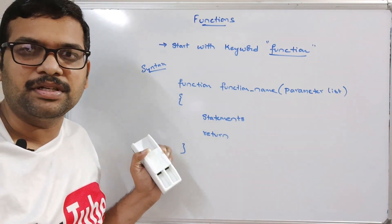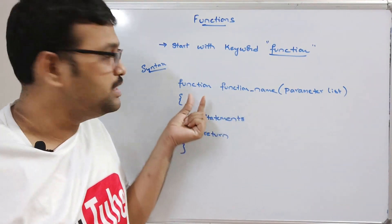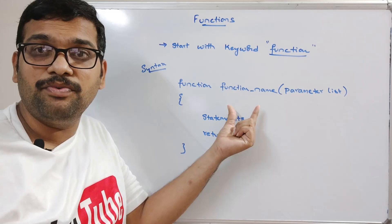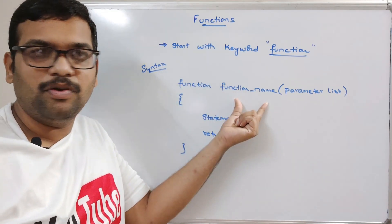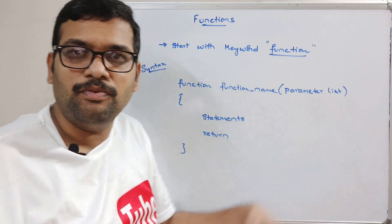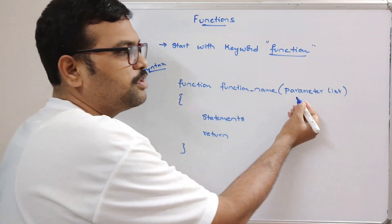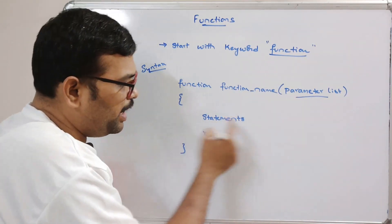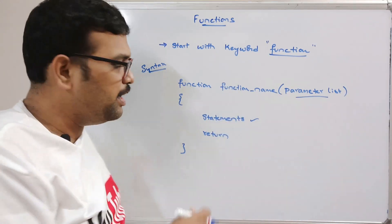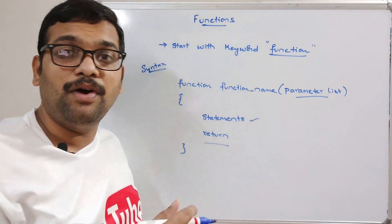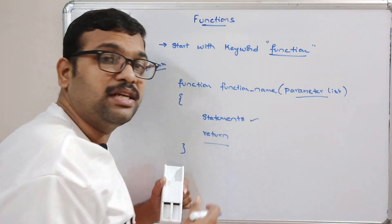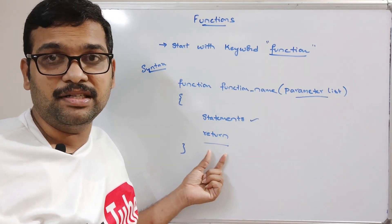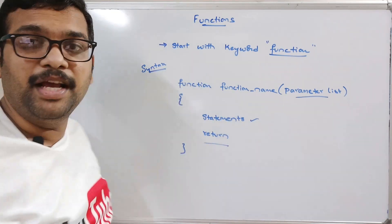So 'function' is the keyword and the function name is the identifier — we have to follow naming rules. The parameter list is optional; we can give input via the parameter list or declare variables inside the function. The return statement is also optional — if you want to return a value use it, otherwise you can display the output directly inside the function.